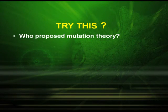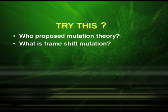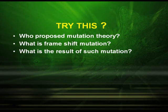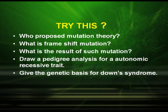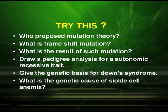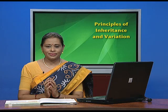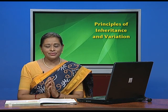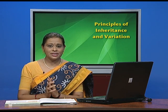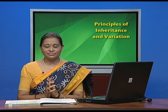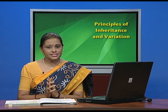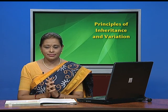Now let us have a small quiz. Try this: Who proposed mutation theory? What is frame shift mutation and what is the result of such mutation? Draw a pedigree analysis for an autosomal recessive trait. Give the genetic basis for Down syndrome. And what is the genetic cause of sickle cell anemia? So students, in the next episode, we are going to discuss the chapter Molecular Basis of Inheritance. Under that chapter, we will first discuss DNA structure and the search for genetic material. Thank you.